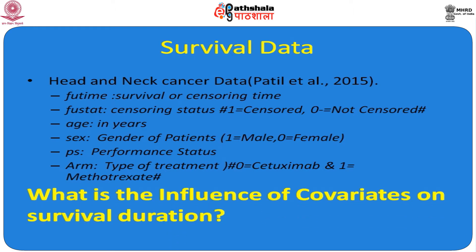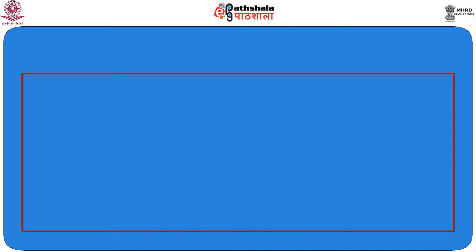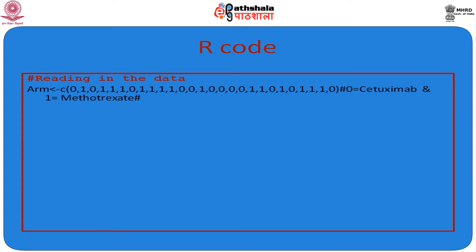Now we will formulate our objective: what is the influence of covariates on survival duration. The R code reads the data where arm represents treatment assignment — the first individual treated with cetuximab, second with methodopsic, third with cetuximab, and so on. Each patient is coded as 0 or 1 indicating which treatment they received.